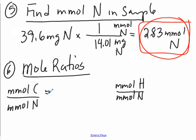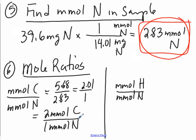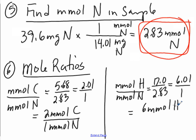For carbon: 5.68 divided by 2.83 equals 2.01 over 1. That means there are 2 millimoles of carbon for every 1 millimole of nitrogen in the compound. For hydrogen: 17.0 divided by 2.83 equals 6.01 over 1, which means there are 6 millimoles of hydrogen for every 1 millimole of nitrogen.